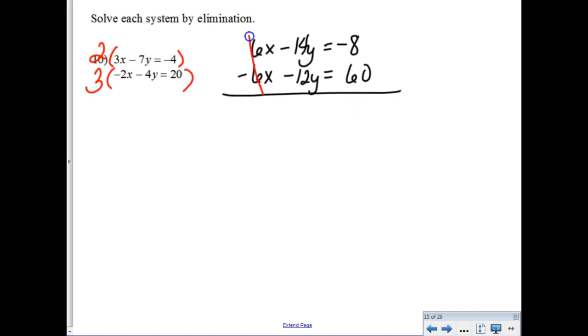Alright. I can't tell you how many times I messed this problem up yet this last hour. Alright. So, that's... Where are we at here? Negative 26y equals 52. Alright. Divide both sides by negative 26, and y is negative 2. And then you'd go back to your favorite equation and plug that in.